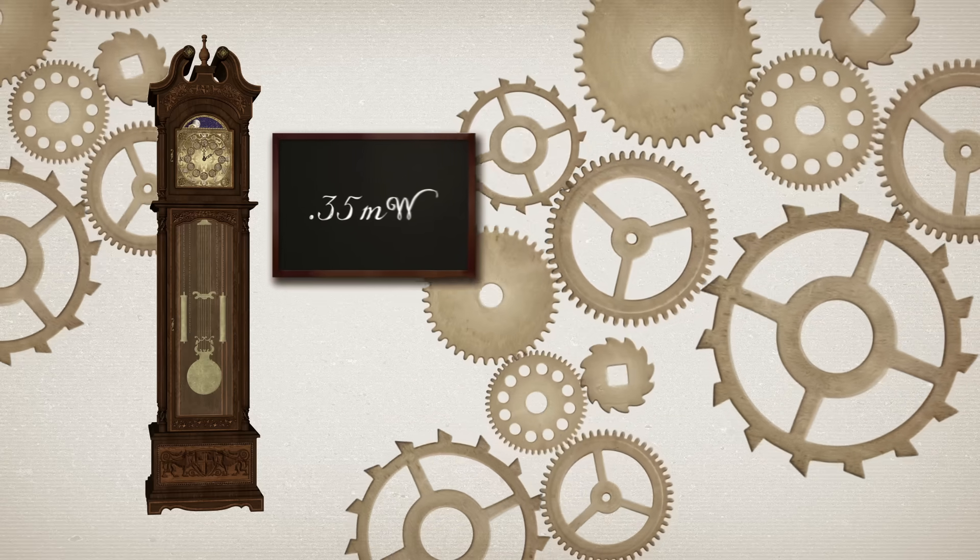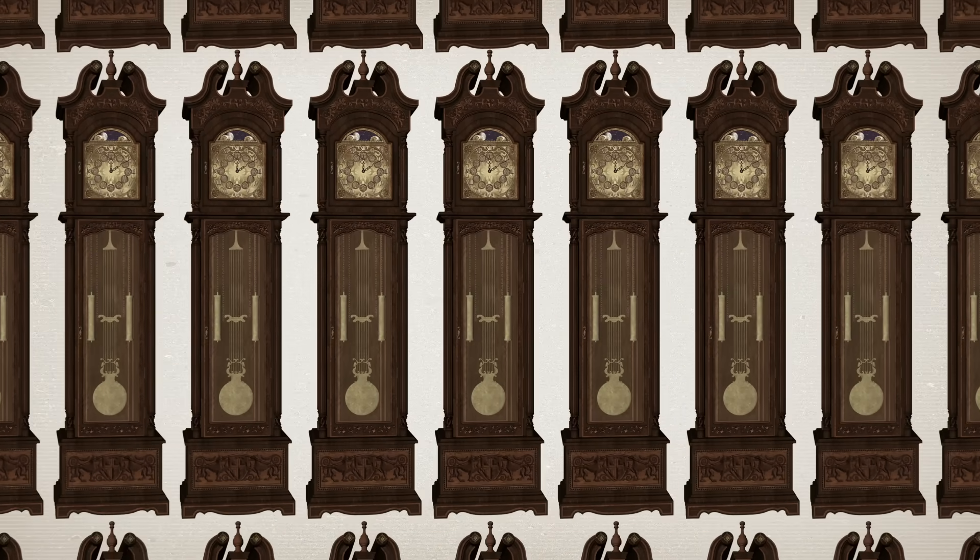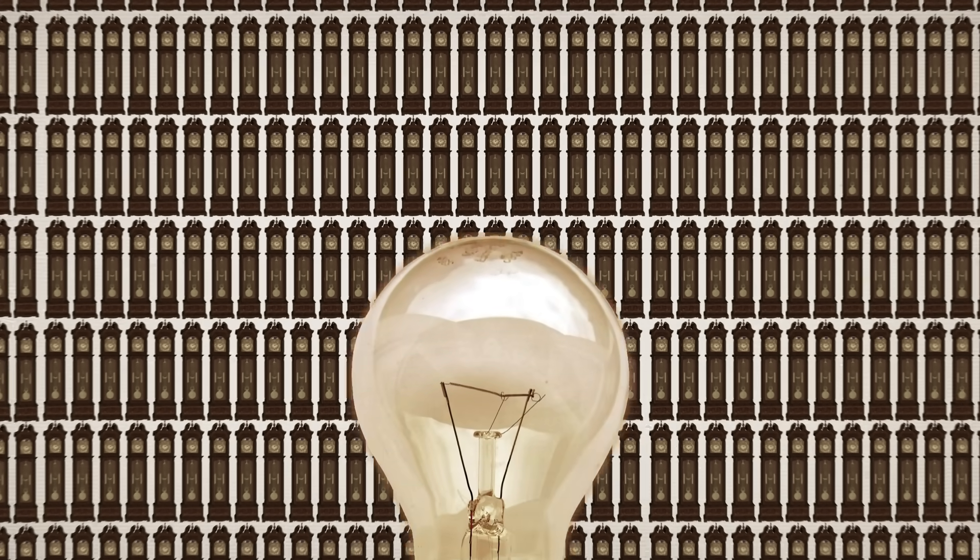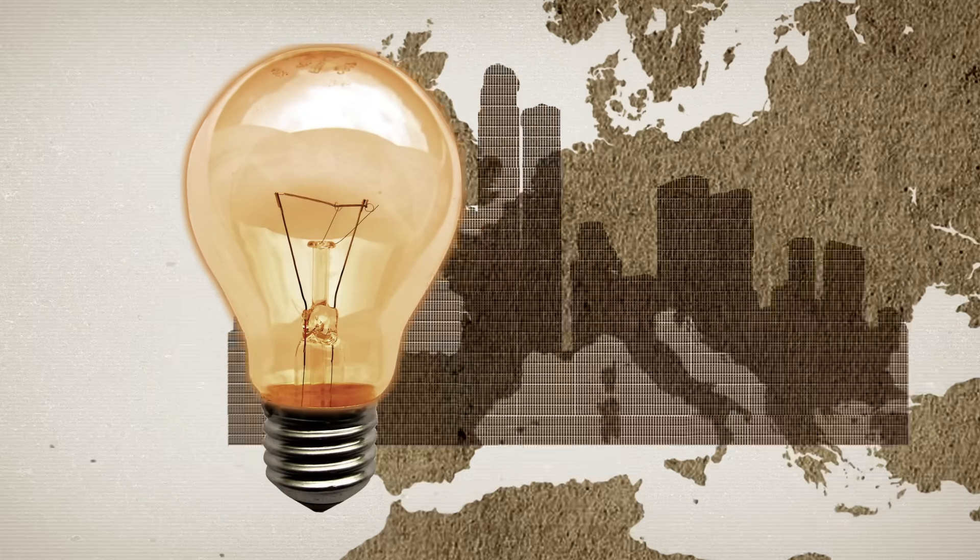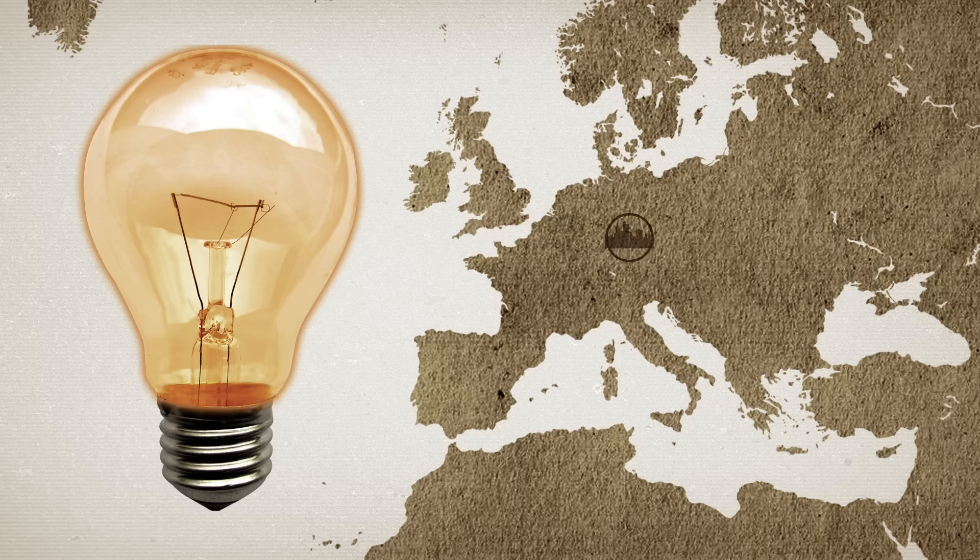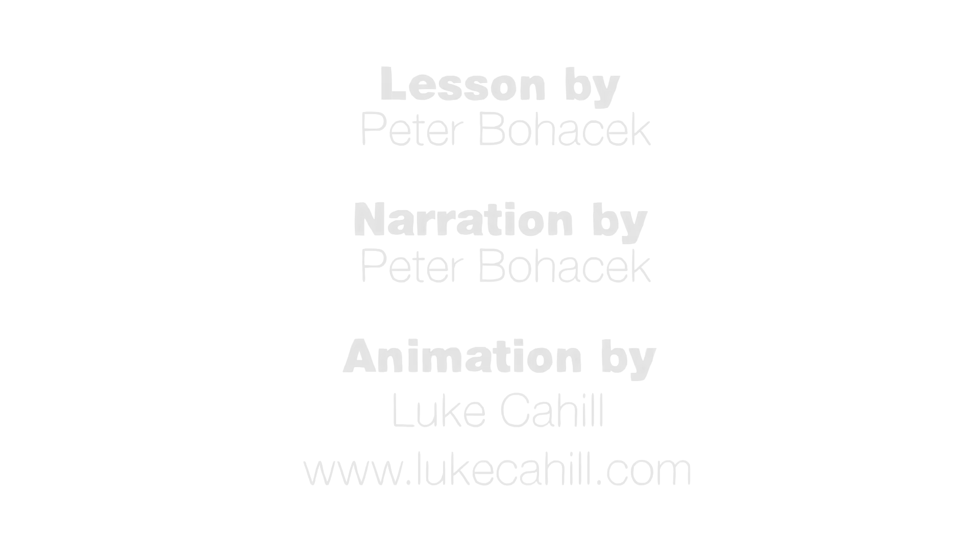That's a tiny amount of power. This clock uses so little power that you could run almost 300,000 clocks using the same power it takes to run one 100-watt bulb. That's right, you could run a clock in every house in a medium-sized city with that much power. That's a pretty amazing conclusion, and it took knowledge of work and power to figure it out.